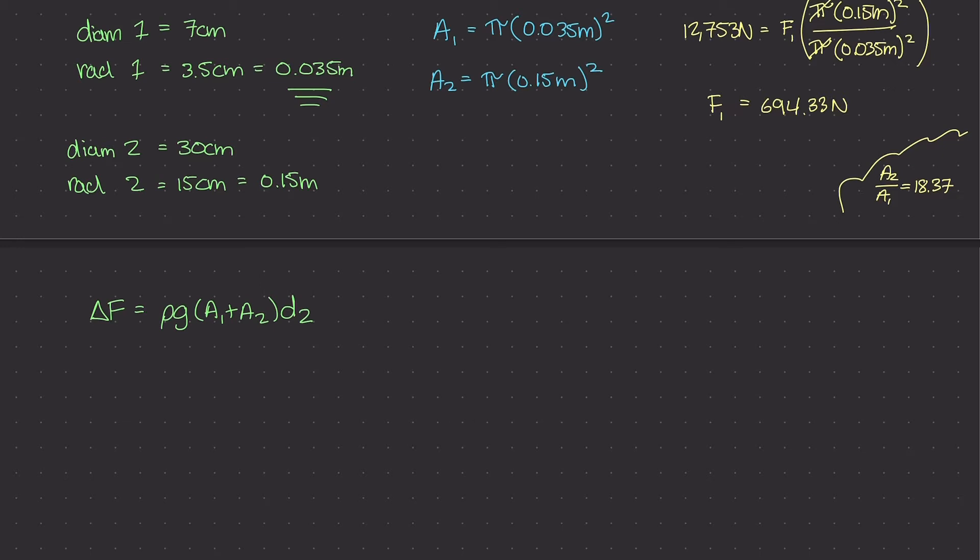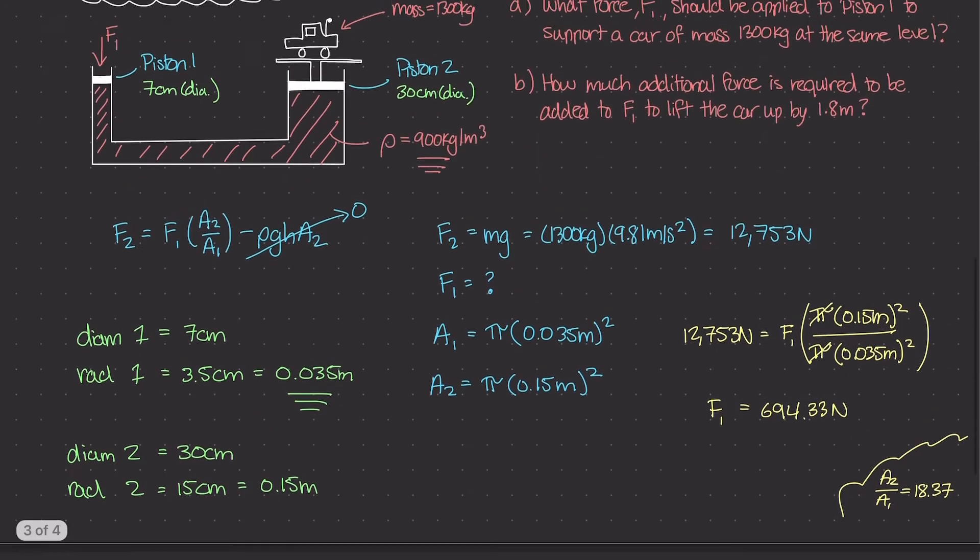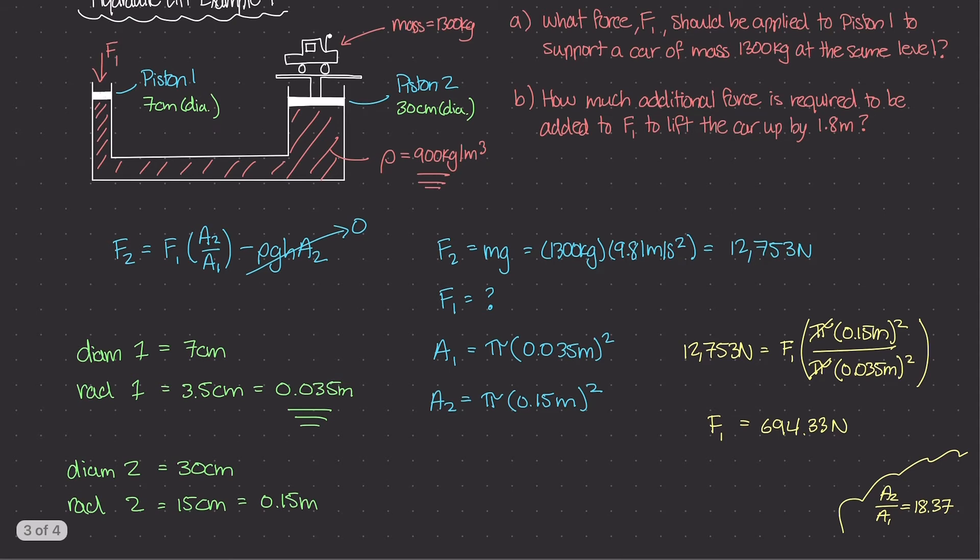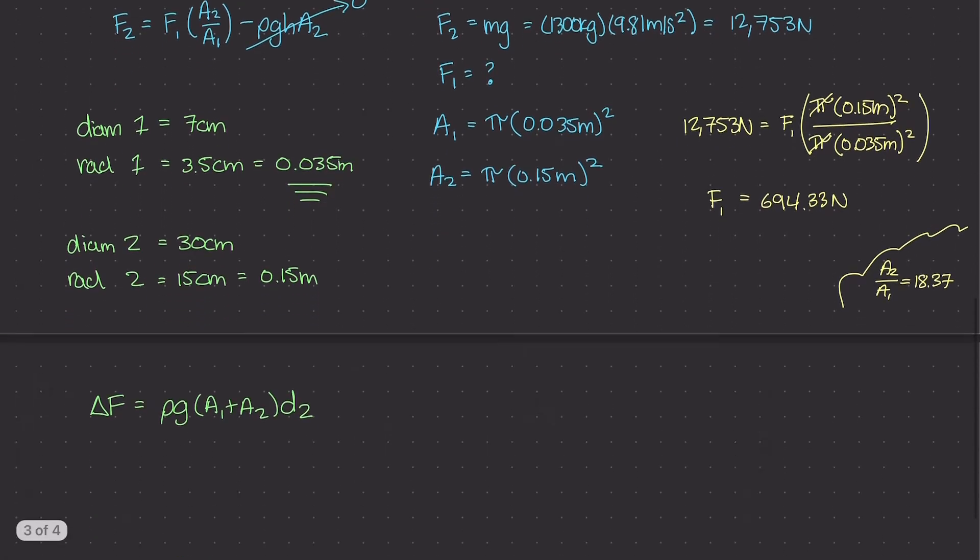Then we have this rho times G, which is our mass density times our gravitational constant. Then we have this A1 plus A2 term, which is the area of the two different pistons added together. And then we have this D2 term. This D2 term really is the distance that piston 2 will move up. And that is how we derive that equation in the last few videos.